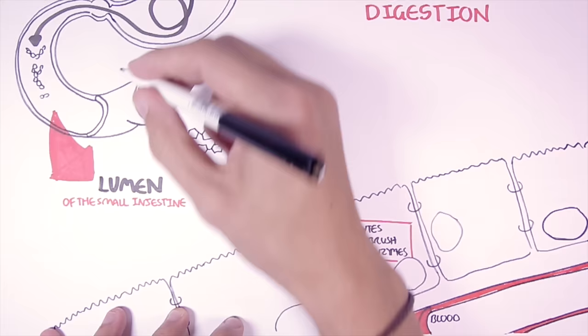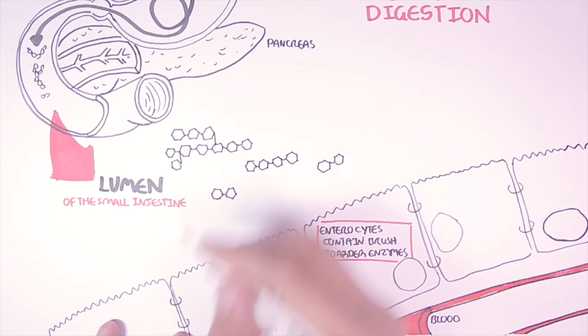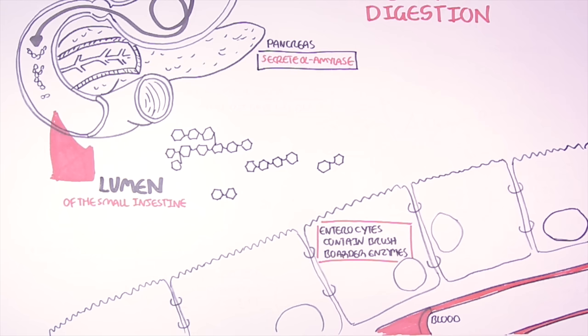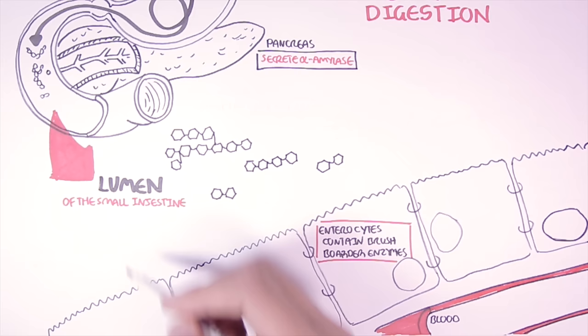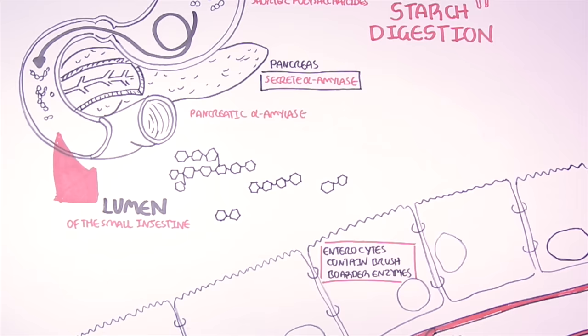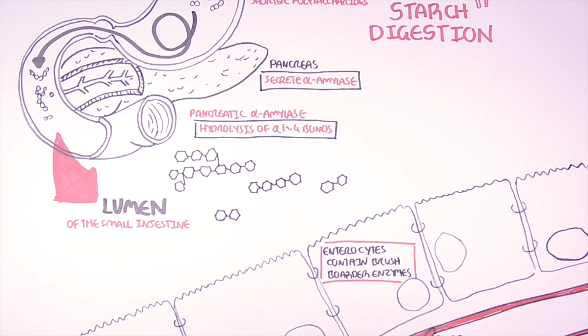Now when starch reaches the small intestine another organ known as the pancreas which is situated here will begin to secrete alpha amylase. So there was alpha amylase secreted from the salivary glands and the pancreas. The pancreatic alpha amylase will be secreted into the small intestine where it will break down the α-1,4 glycosidic bonds, just as what the salivary amylase did. So pancreatic alpha amylase hydrolyzes the α-1,4 glycosidic bonds breaking down the starch further.